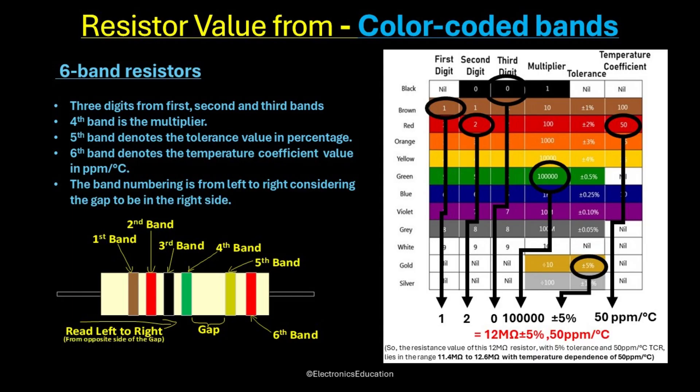This means the resistance value can be anything between 11.4 megaohms to 12.6 megaohms. And the final resistance value can change by about 50 ppm or 600 ohms for every 1 degree Celsius change in temperature.